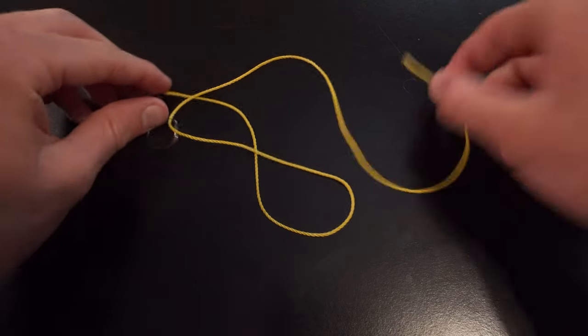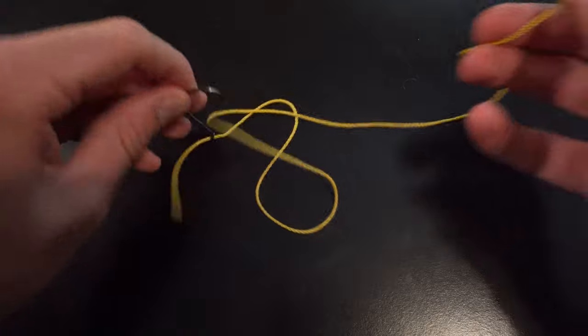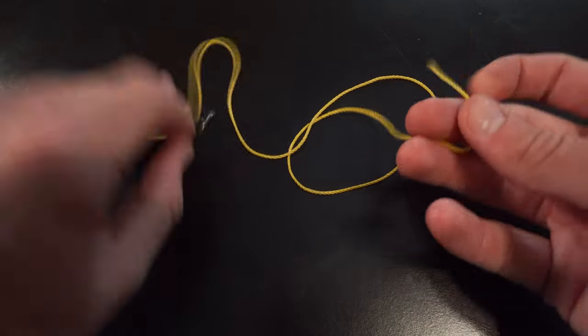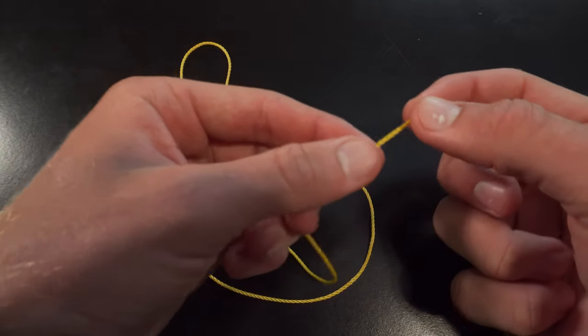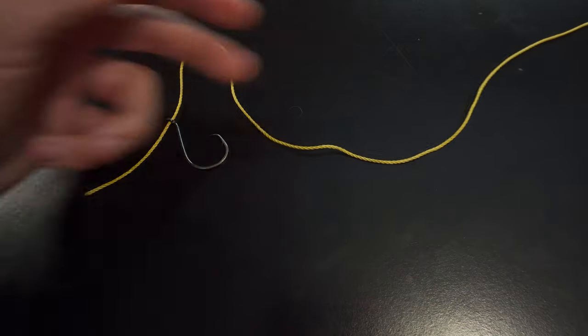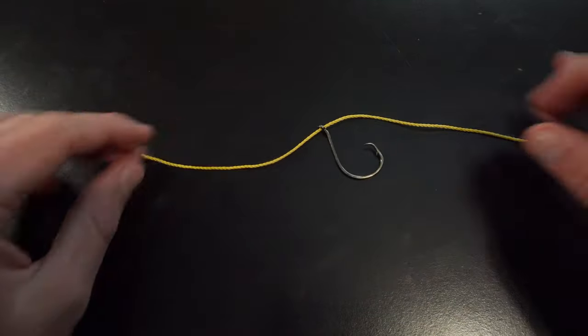Alright guys, so to start this very simple knot, I just have some twine today to show you guys for a better visual. What you're going to do is basically say this is going up to your rod and reel, this is the bottom of your line.